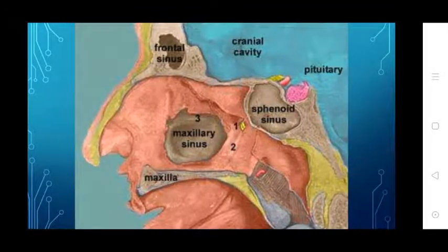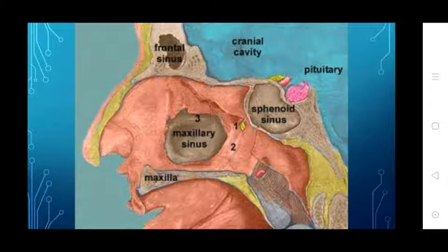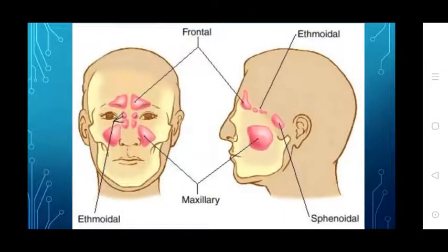The paranasal sinuses include the frontal sinus, sphenoid, maxillary, and ethmoid sinuses. This diagram shows the frontal lobe, maxillary sinus near the nose, ethmoid, and sphenoid sinuses.